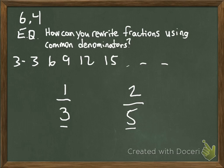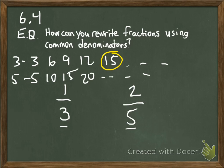Then I take a look at the multiples of the other denominator, which is 5. I have 5, 10, 15, 20, and they could go on and on. But I can stop right now because I can see that there is a common multiple.